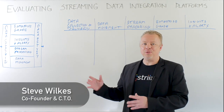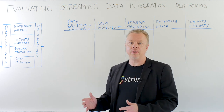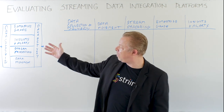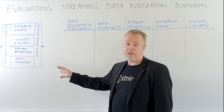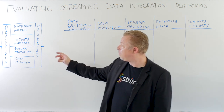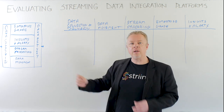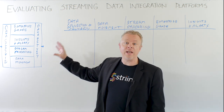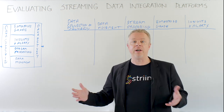We've already gone through what the components of a streaming integration platform are. Today, we're going to talk about how you go about evaluating streaming data integration platforms based on these components. To reiterate: you need real-time continuous data collection, continuous data movement from source to destination, delivery to all target systems, stream processing, enterprise-grade scalability and reliability, and insights and alerts on data movement.